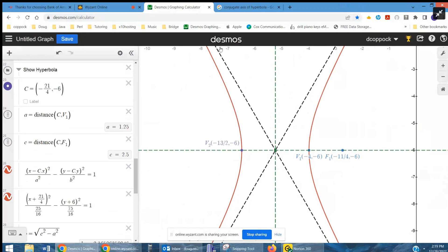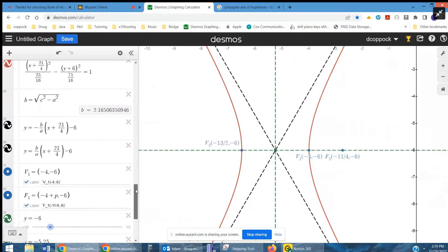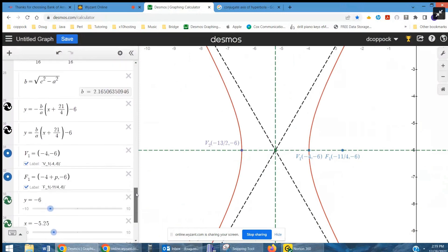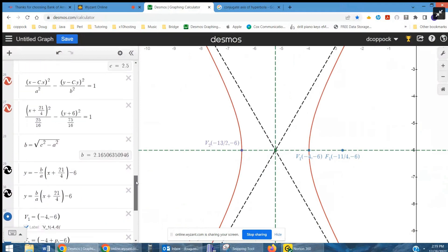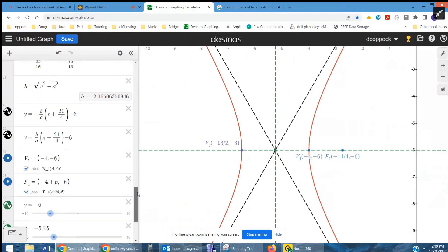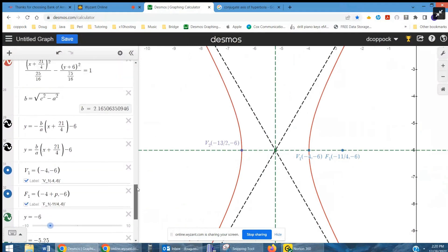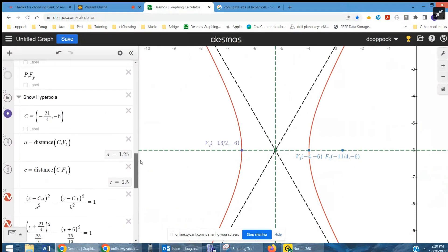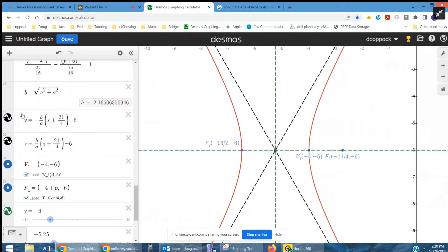And these lines are the asymptotes of the hyperbola. Oh, there they are, right there. Opposite of B over A, that's the slope, times X minus the X coordinate of the center, minus the Y coordinate of the center.